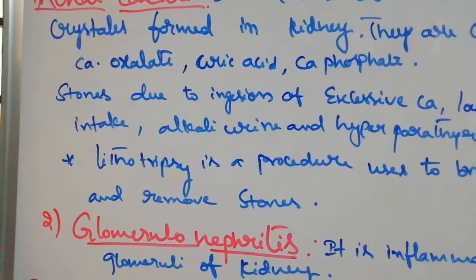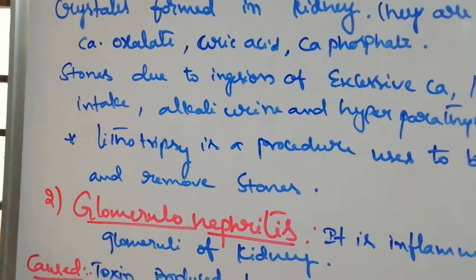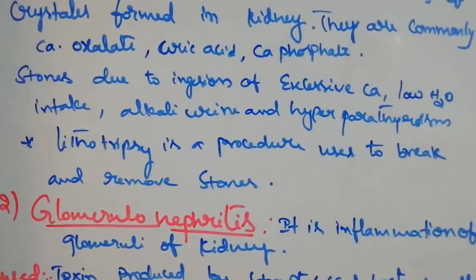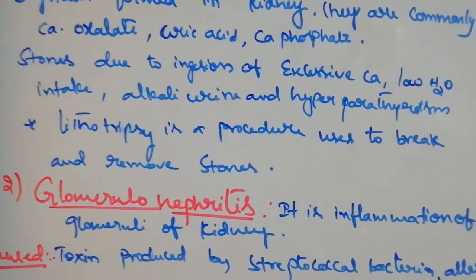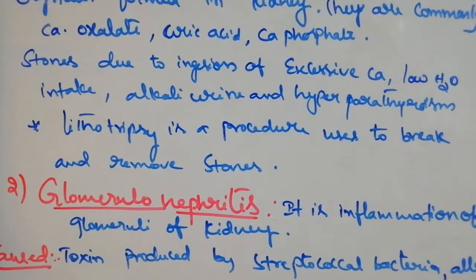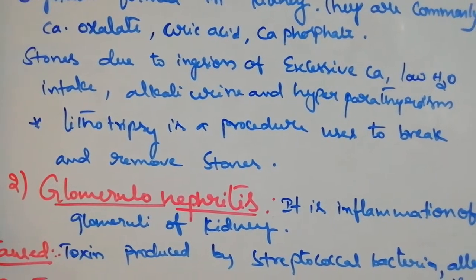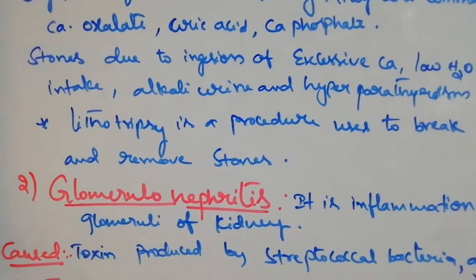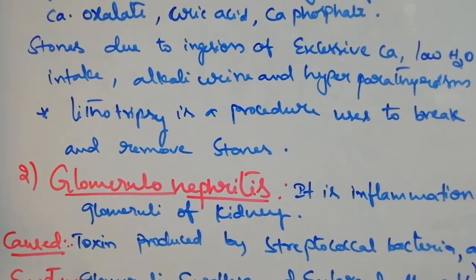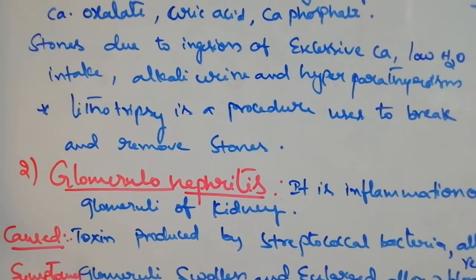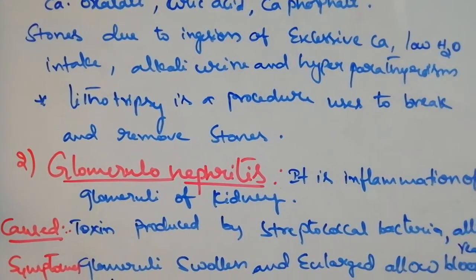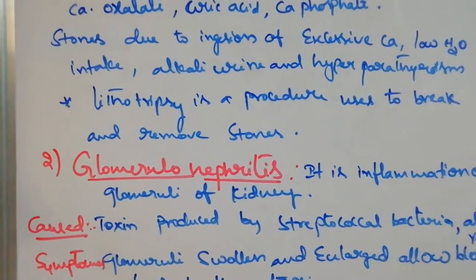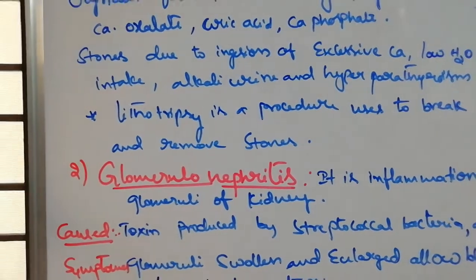Kidney stones form due to ingestion of excess calcium. The reasons for stone formation are: ingestion of excessive calcium, low intake of water, excess alkali or SDQ, and hyperparathyroidism.